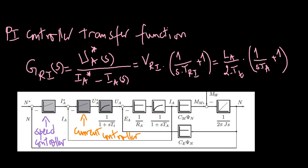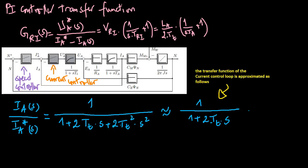The speed control, according to this figure, uses the current control designed in the last video as a subordinate section, whereby the transfer function of the current control loop is approximated as follows.